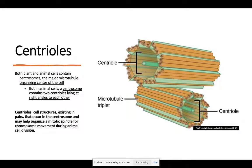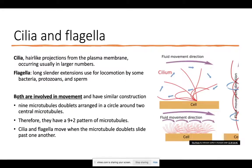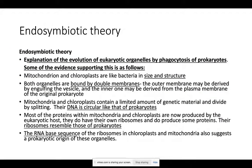Here we have a picture of a centriole. Cilia and flagella are both involved in movement and have a similar structure. The flagella is a long slender extension used for locomotion by some bacteria, protozoans, and sperm. The cilium has a fluid-like movement that helps it propel along. Just know that cilia and flagella are both involved in movement.